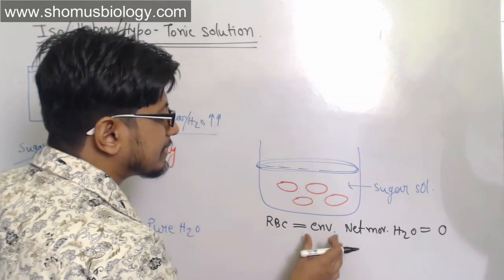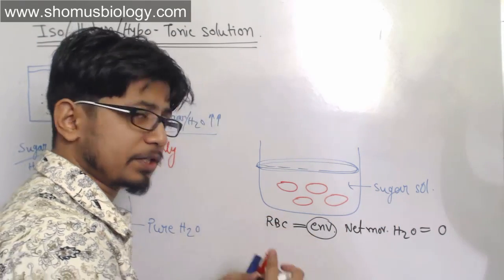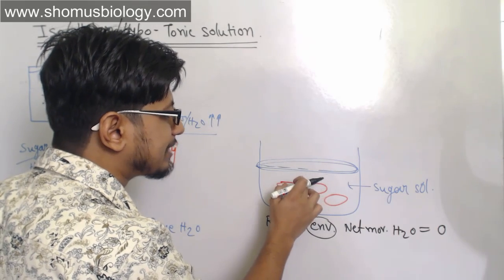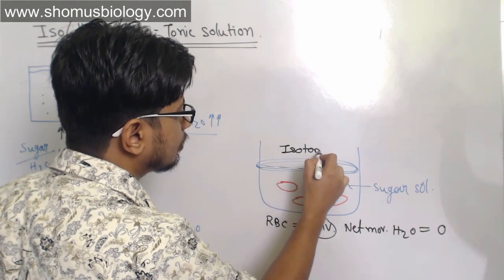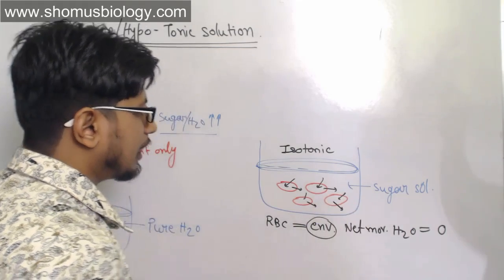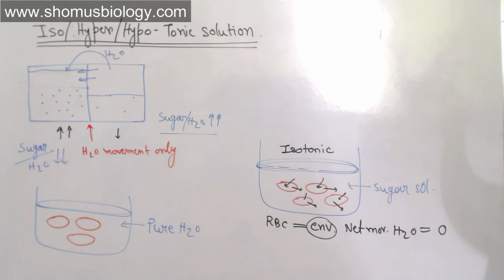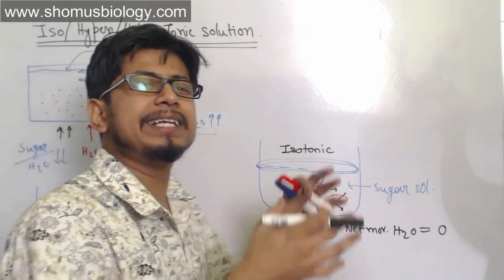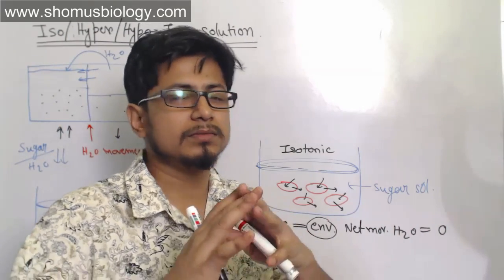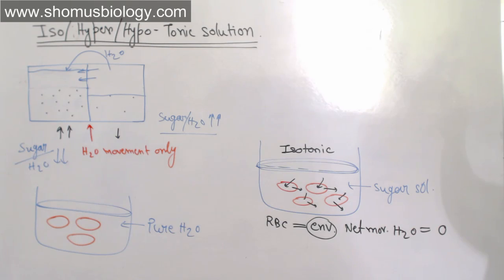If the RBC is placed in an environment where the concentration of sugar — or any solute, any salt — is the same inside the cell as outside, that solution is known as an isotonic solution. Water goes in and out of every single RBC, and as a result the RBC remains as it is. There won't be any structural changes. Net incoming or outgoing movement of water is zero.